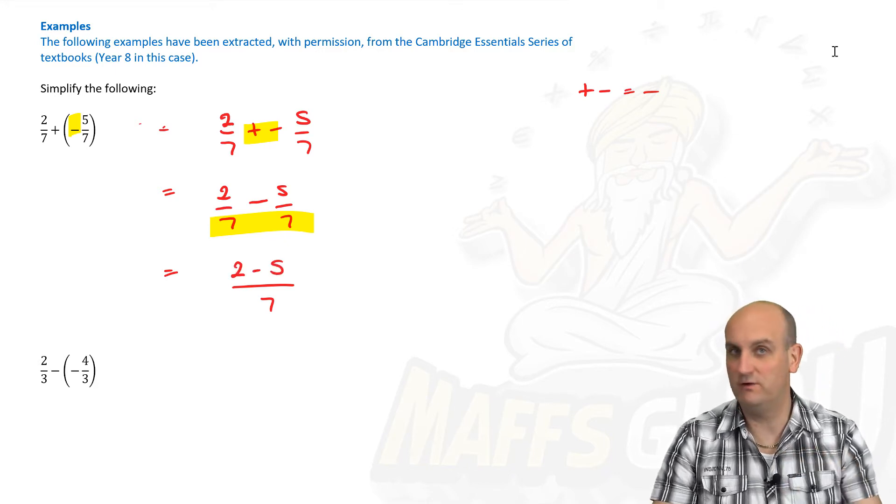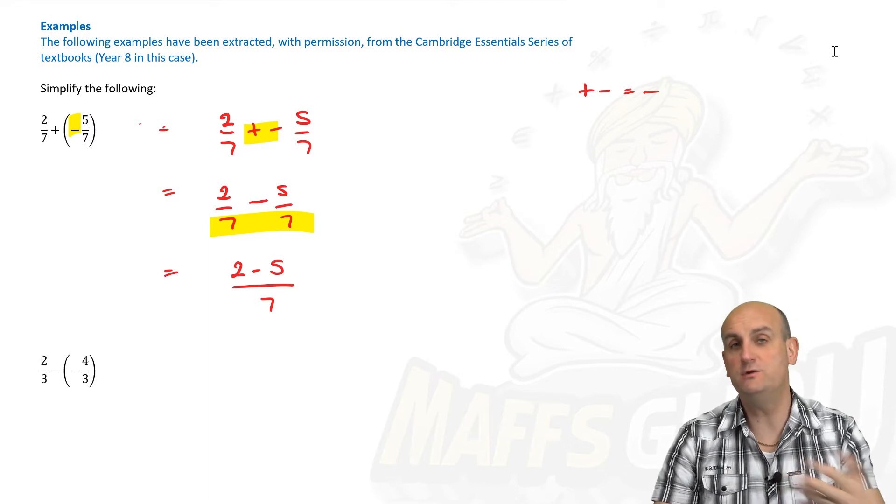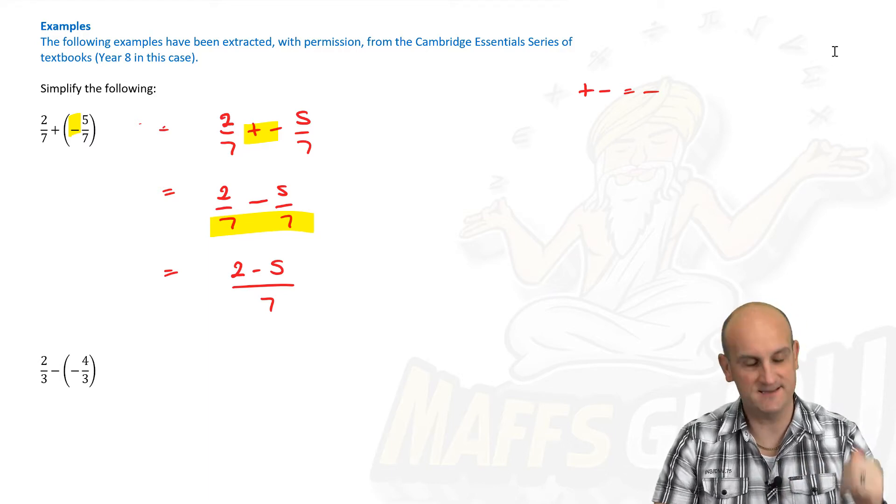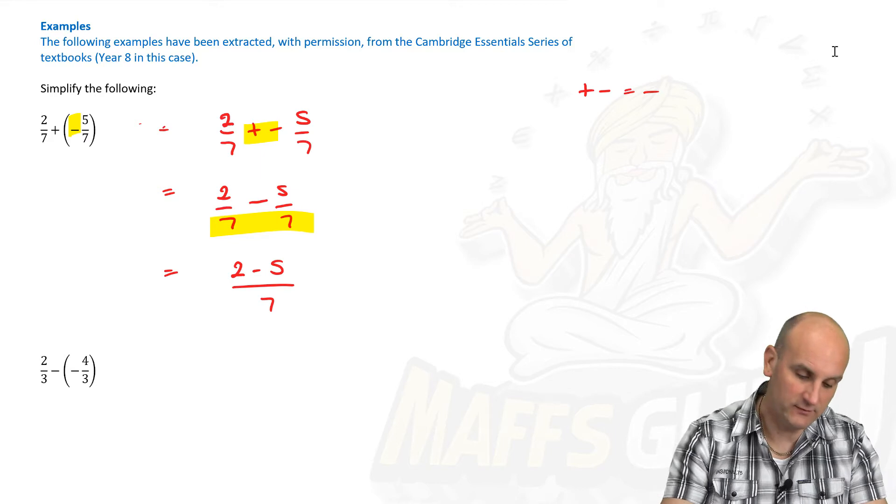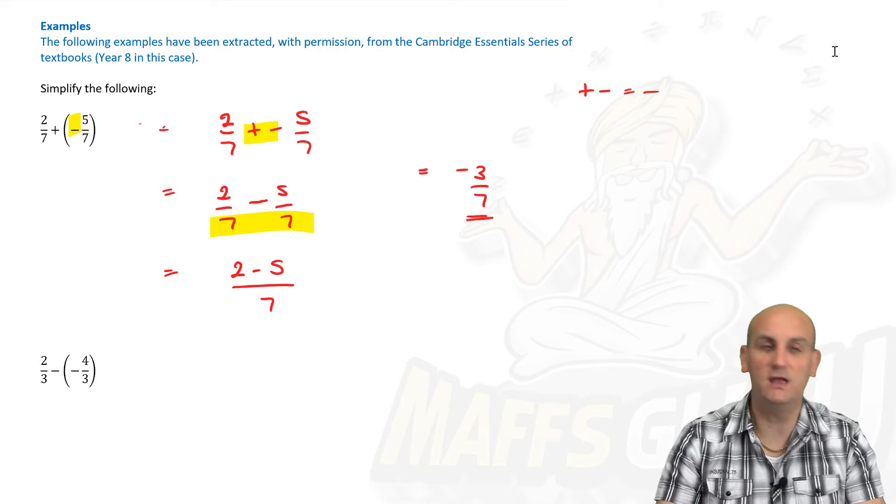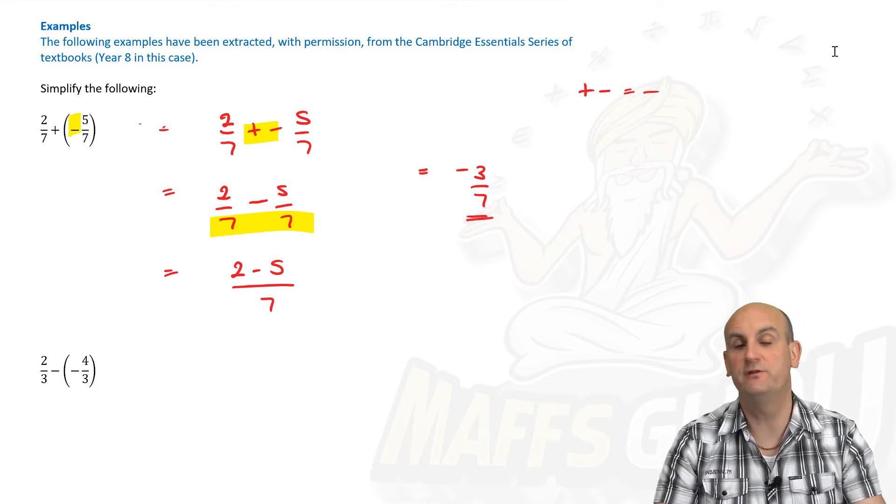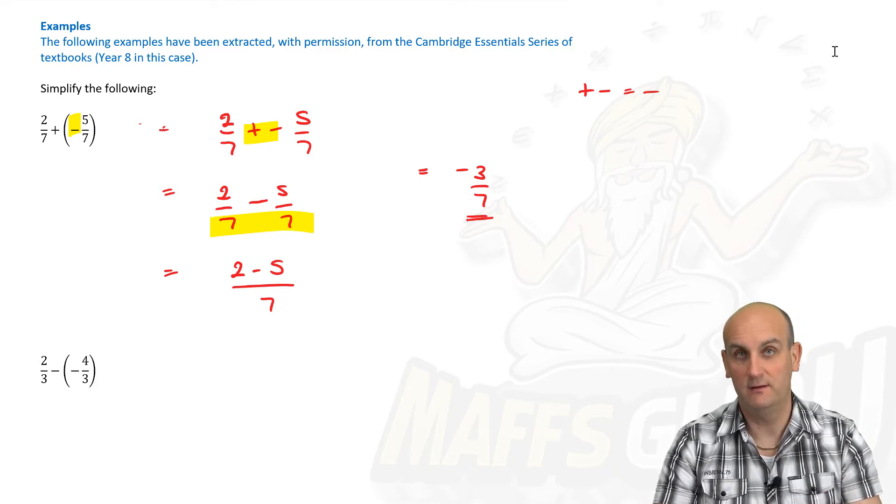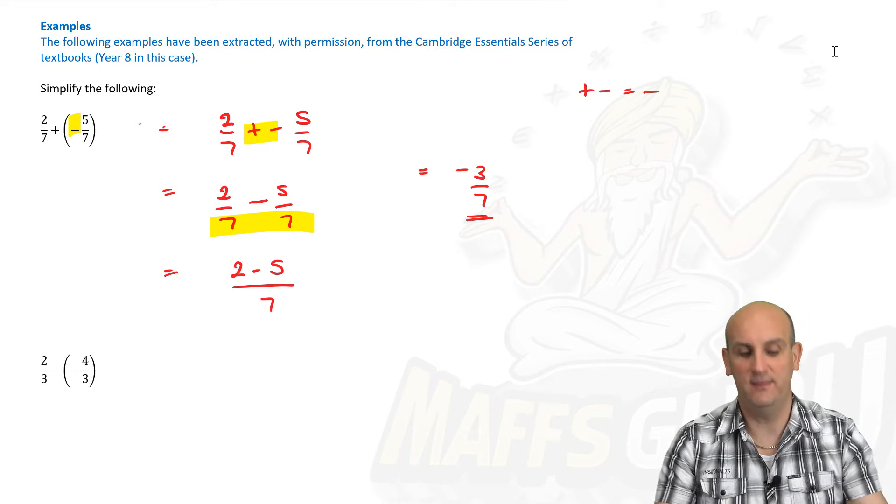And then obviously, ladies and gentlemen, here we hit another issue with negative numbers. Two take away five isn't three. It is negative three. So the answer to this would be minus three on seven. One final check you would need to be able to do here is, does it need to be cancelled down? And in this situation, it doesn't. And there we go.